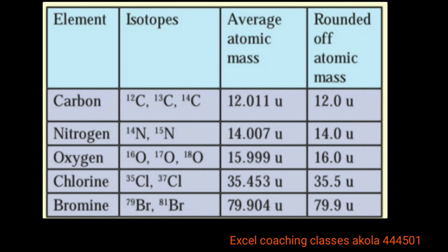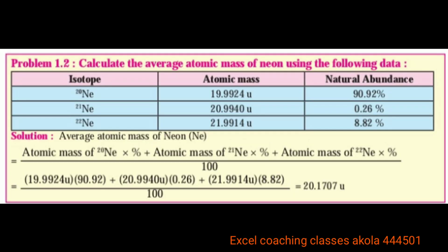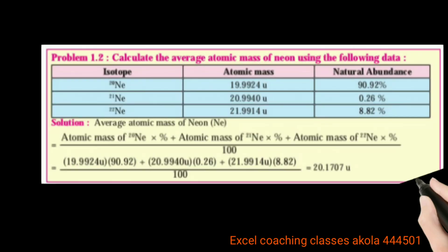For example, neon is given on the screen. We've told you first about abundance and mass. What is abundance and mass? Multiply and total isotopes, summation divided by 100. You can see neon-20, neon-21, and neon-22 — these three isotopes. Neon-20 has abundance 90.92%. You multiply abundance by mass for each isotope, then sum all three and divide by 100. The average atomic mass of neon is 20.1707 unified. That's the method to calculate average atomic mass.